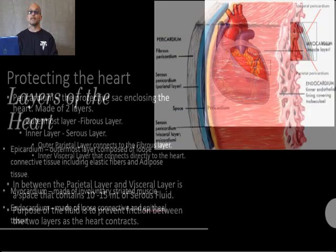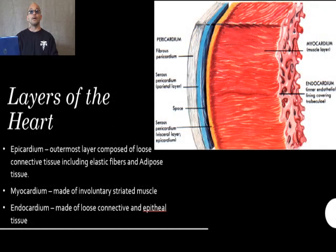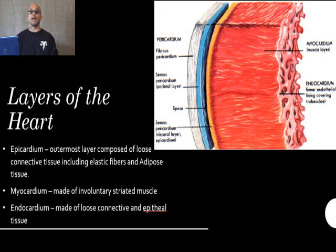Now we will discuss the layers of the heart. The heart is also made up of three distinct layers: the epicardium, the myocardium, and the endocardium. The epicardium is the outermost layer and is composed of loose connective tissue that includes elastic fibers and adipose or fat tissue. The myocardium is the middle layer and is made up of involuntary striated muscle tissue. The innermost layer, the endocardium, is made up of loose connective and epithelial tissues.